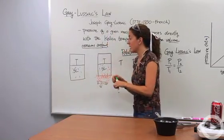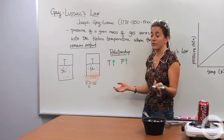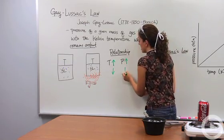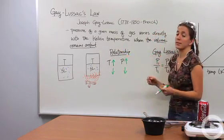So let's talk about this relationship. We know it's a direct relationship. As temperature increases, so does pressure. So temperature and pressure have a good relationship as long as the volume remains constant.